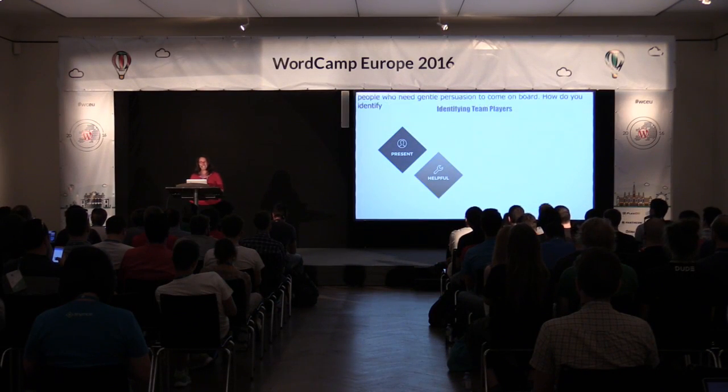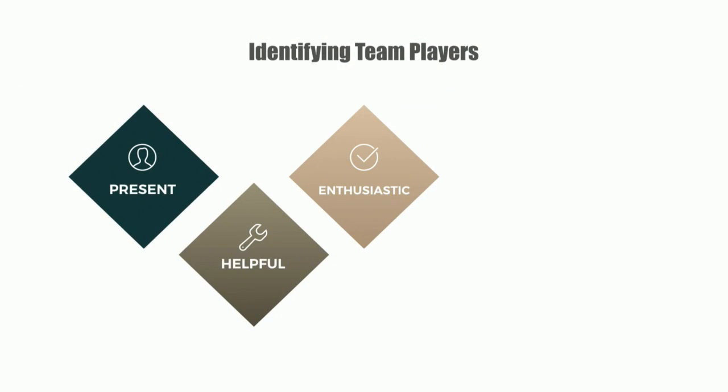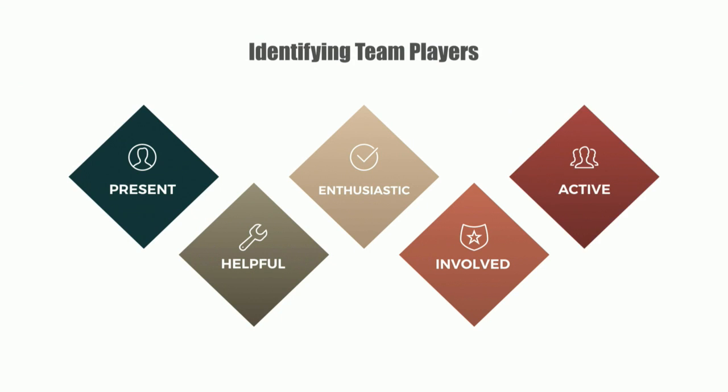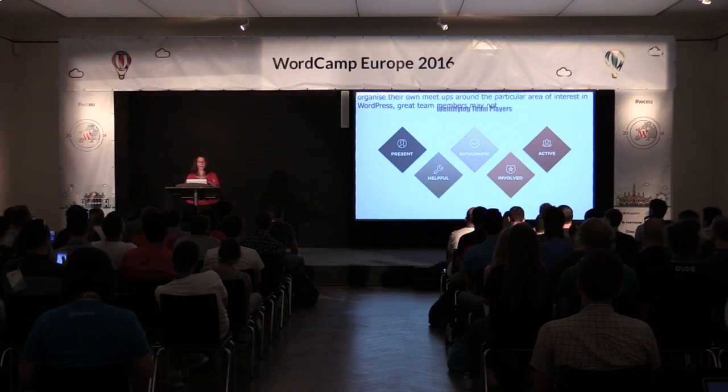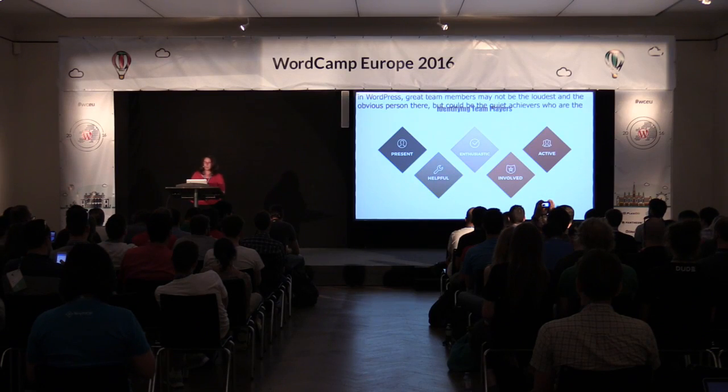How do you identify potential team members? Team players are always around — they help without being asked, they may be first to arrive and last to leave, they participate and may be keen to organise their own meetups around their particular area of interest. Great team members may not always be the loudest person there — they could be quiet achievers who are loyal, regular attendees who could be quietly encouraged to take a more organising role. They may not put their hand up; you may need to approach them, and they may be really excited when you ask.